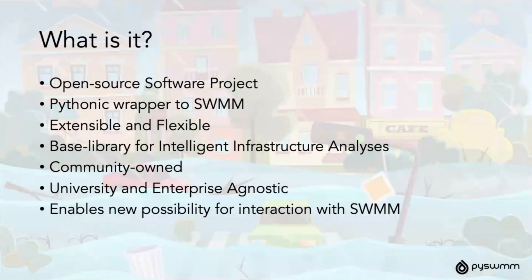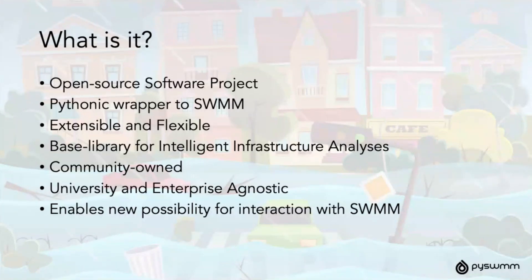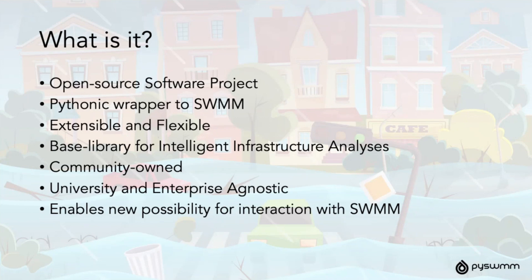It's university and enterprise agnostic. One of the things we're really careful about is creating a space where this project does not show any favoritism to any university or enterprise. A lot of the funding for initial development came from various universities, but MNET had a really big role in driving the open source push. When you wrap Python around SWIM, it enables all kinds of new possibilities for interaction, and we have like 150,000 open source libraries available in the Python Package Index, which helps us get to answers really fast. We don't have to reinvent a new optimization framework.